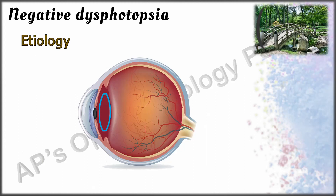Unlike positive dysphotopsia, which are associated more with IOL material and edge design, negative dysphotopsia are more related to the physical position of the optic. They occur due to a gap between the rays that miss the IOL and the rays that get refracted by the back surface or edge of the IOL.